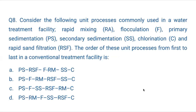Question 8: Consider the following unit processes in a water treatment facility — Rapid Mixing (RM), Flocculation (F), Primary Sedimentation (PS), Secondary Sedimentation (SS), Chlorination (C), and Rapid Sand Filtration (RSF). What is the order of these unit processes from first to last in a conventional treatment facility? The correct order is: Primary Sedimentation → Rapid Mixing → Flocculation → Secondary Sedimentation → Rapid Sand Filtration → Chlorination.